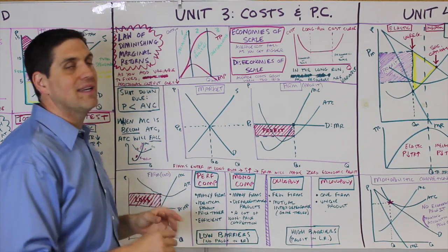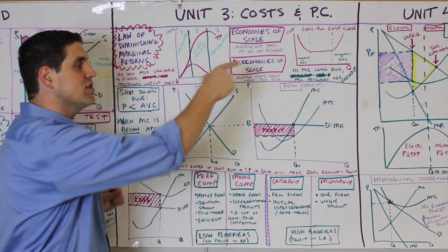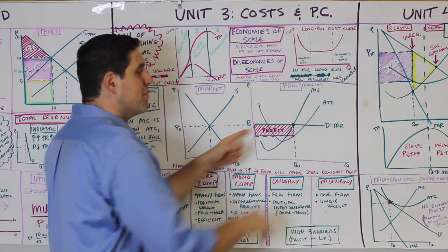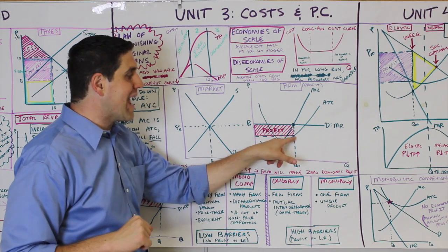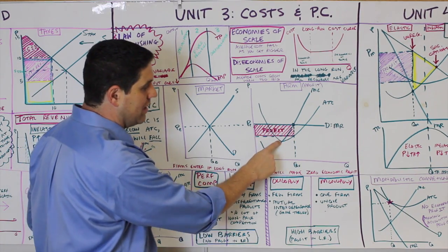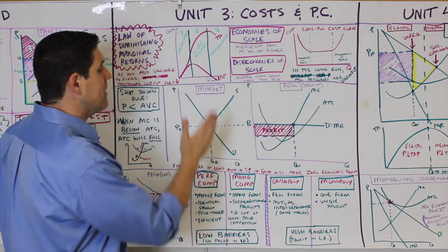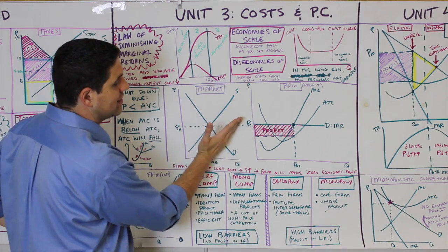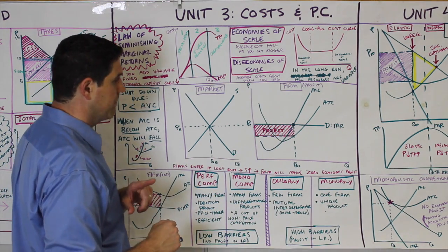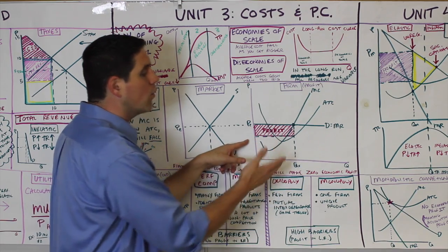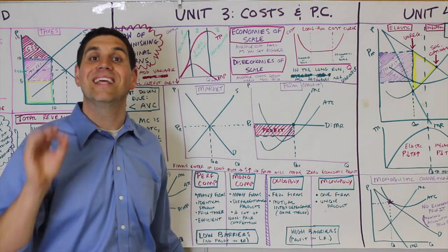After that, we talked about perfect competition. There's supply and demand from Unit 2. A firm here is a price taker — demand equals MR. You produce where MR equals MC, then down to the ATC to find the profit box. In the long run, new firms enter, shifting the supply curve right, lowering the price until there's no economic profit. Remember, no economic profit means accounting profit is still positive.